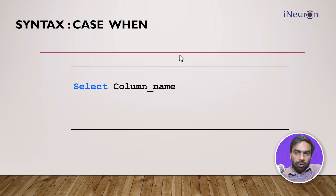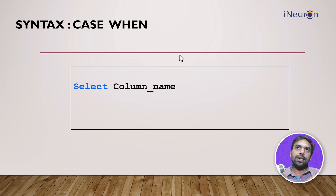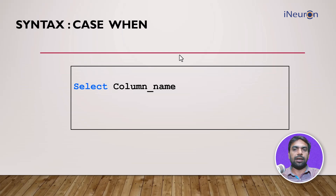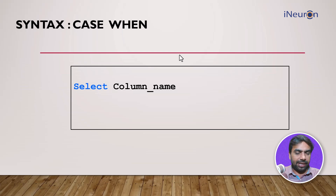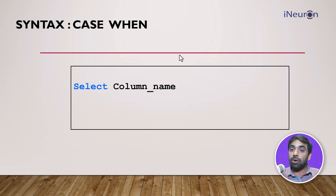Now that we've understood ORDER BY, let's move to the next important one: the CASE operator. It helps us create a new column conditionally based on another column. For example, if there's a department ID column with numeric values like 22 and 25, and I want to assign names — 22 being marketing, 25 being something else — I use the CASE WHEN operator.